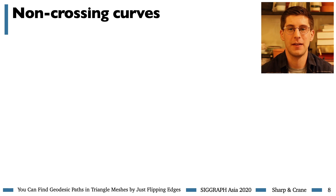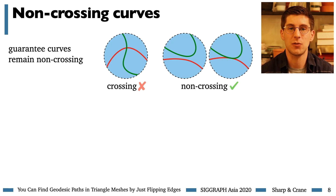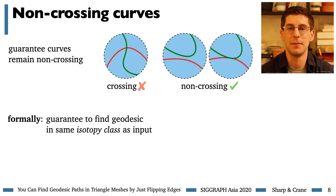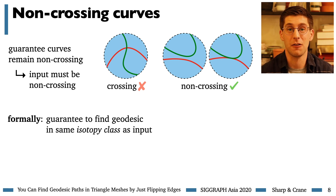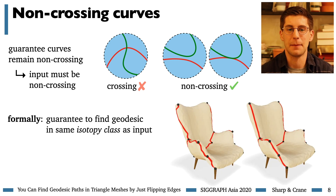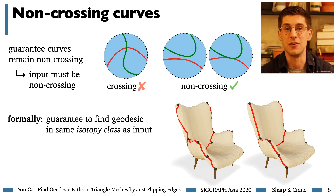One key difference of our method from past approaches: our algorithm guarantees that no new crossings will be introduced by the straightening process — or more formally, we find a geodesic in the same isotopy class as the input. We assume that the input curves themselves are already non-crossing, which is a very important and common setting in practice. For example, suppose we want to straighten a network of cuts to fabricate patches for a chair. It's crucial that we not introduce any new crossings, or we would lose the notion of patches on the surface.